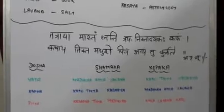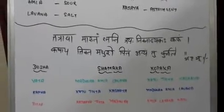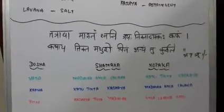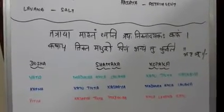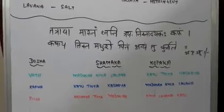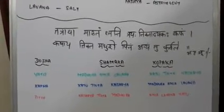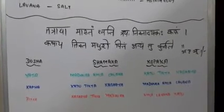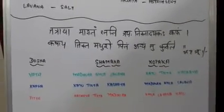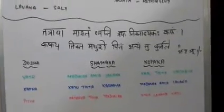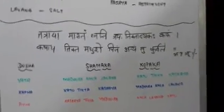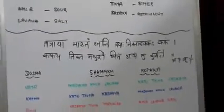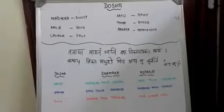This is the case for vata, but vice versa for kapha. Katu, Tikta, and Kashaya rasas are kapha shamaka, whereas Madhura, Amla, and Lavana are kapha kopaka rasas. In case of pitta, Kashaya, Tikta, and Madhura rasas do pitta shamana — that is, they decrease pitta — whereas Amla, Lavana, and Katu increase pitta. Shamaka means reducing or decreasing, whereas kopaka means aggravating or increasing the dosha.